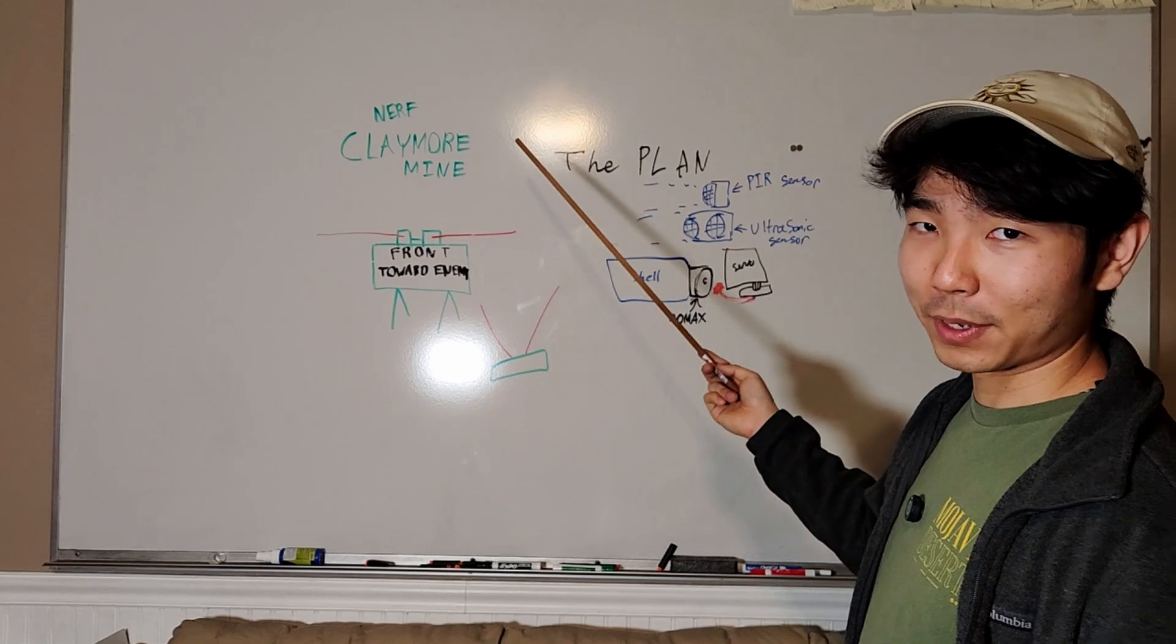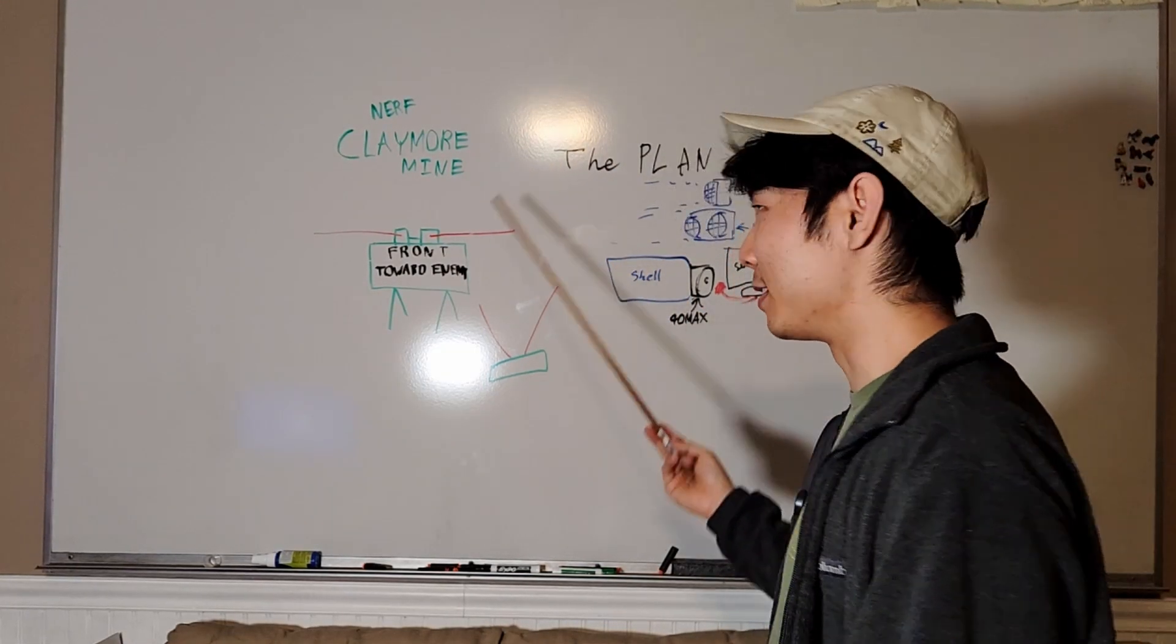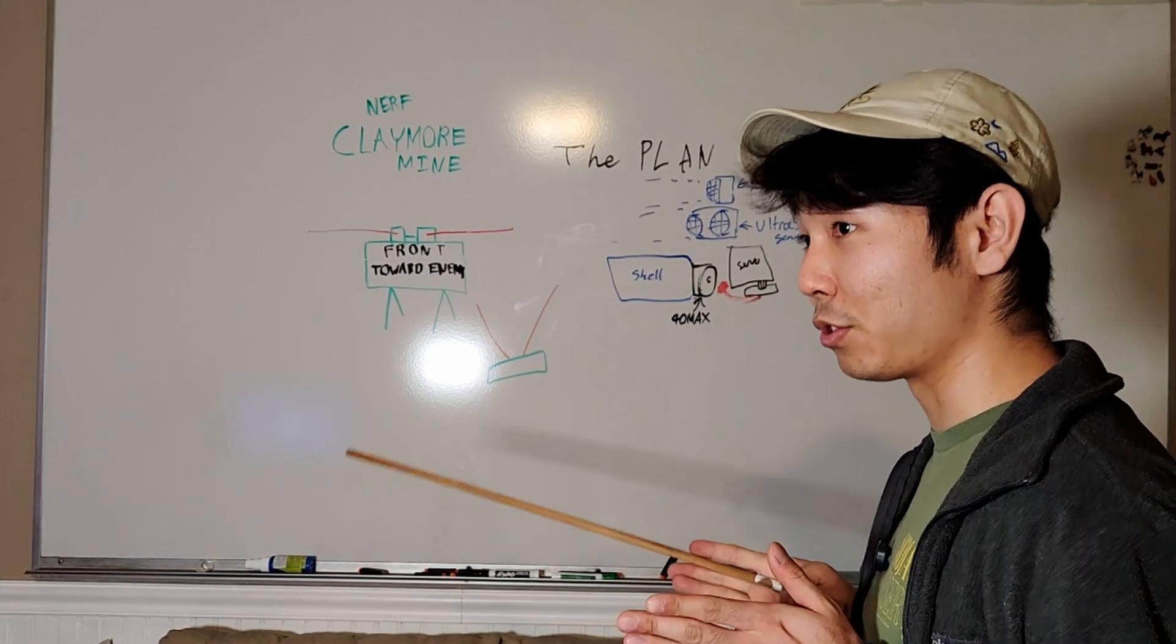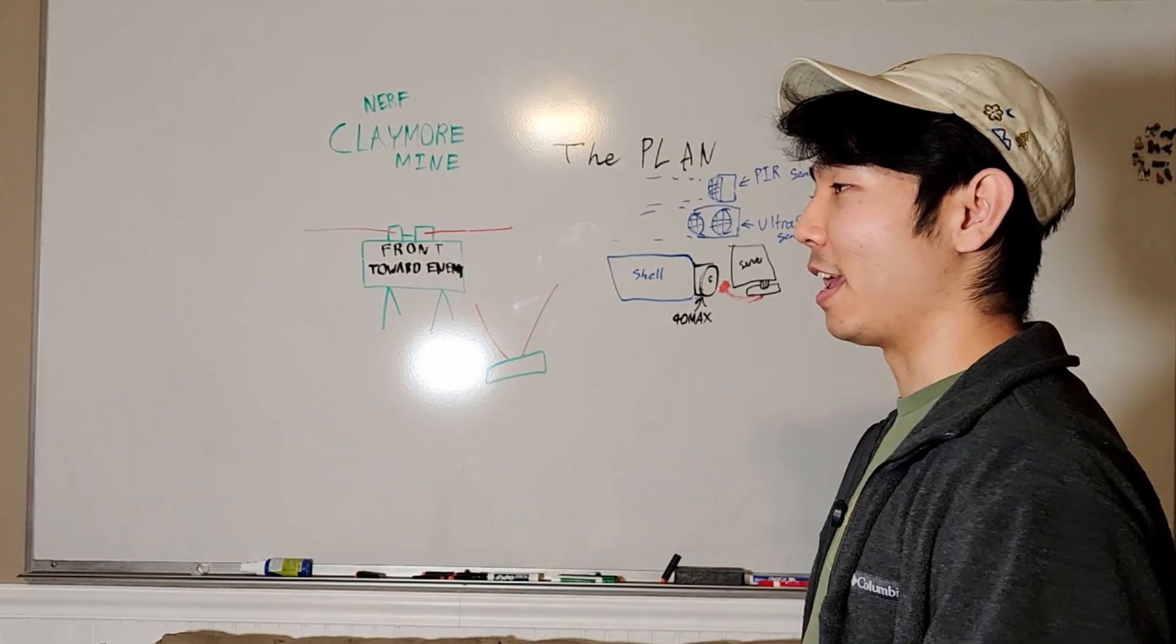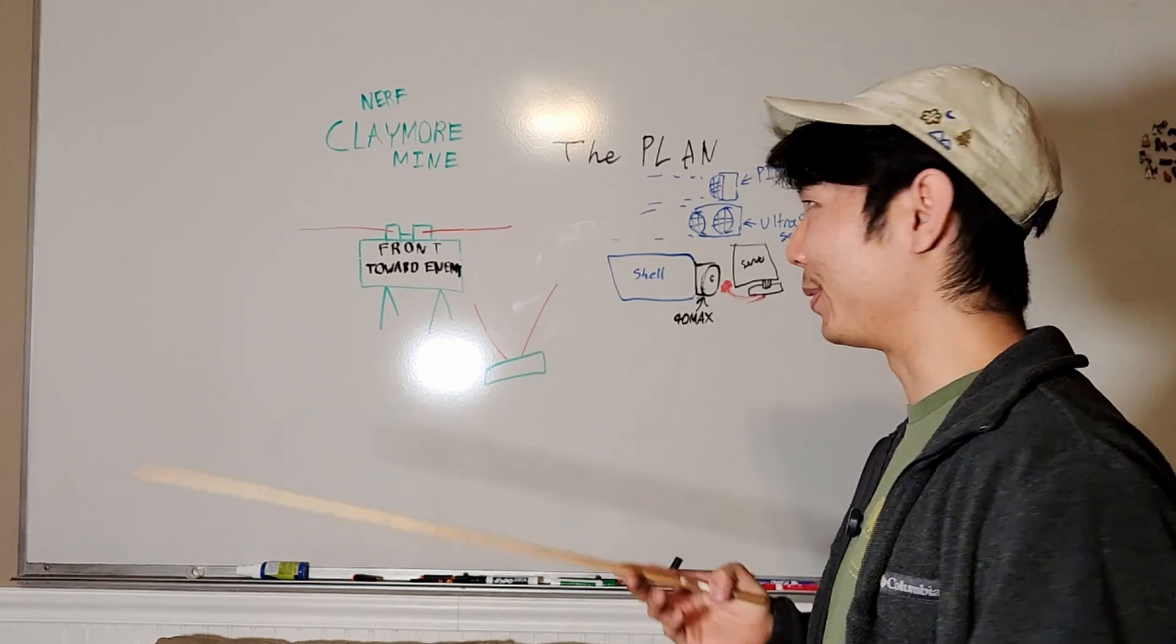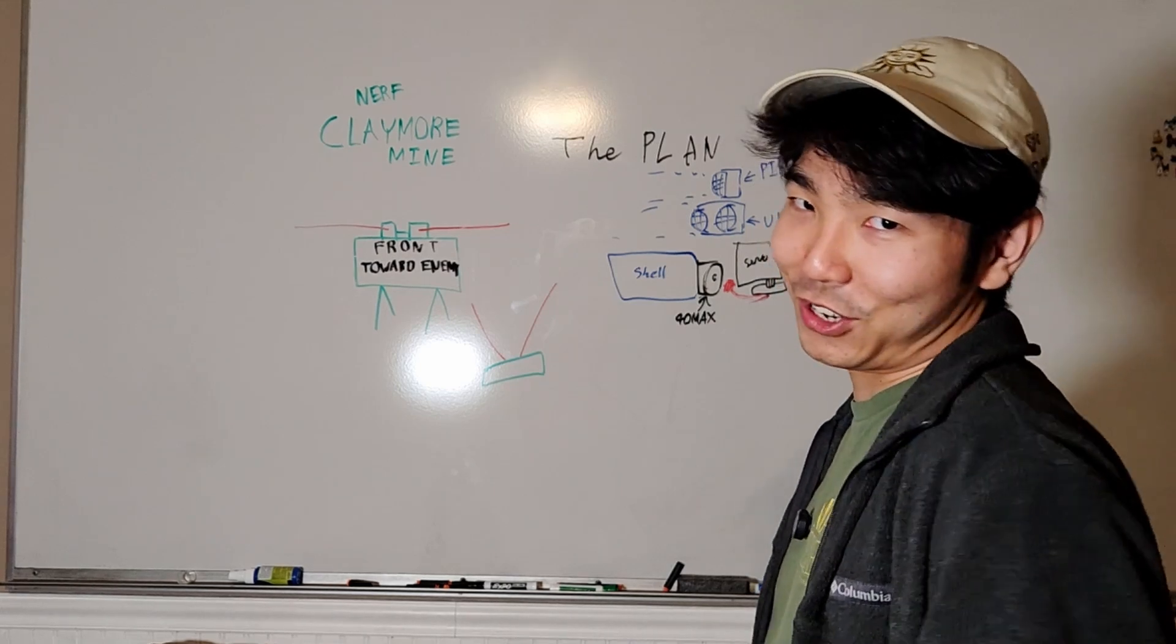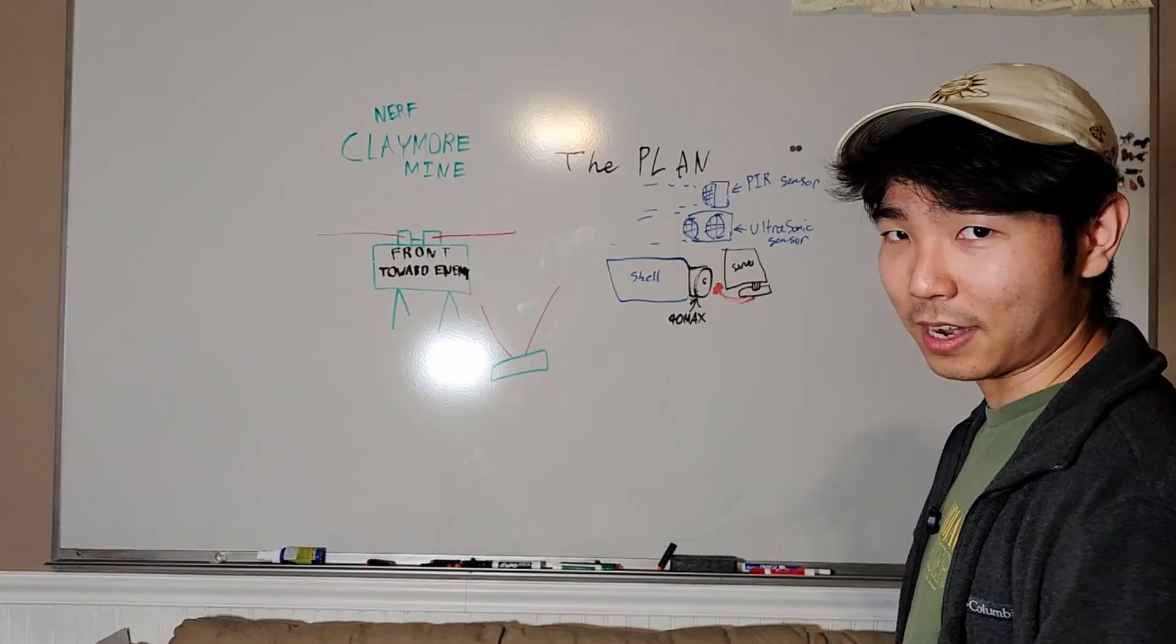Hi, today we're going to be building a nerf claymore mine. If you're not sure what a claymore mine is, it is a directional anti-personnel mine, meaning that it shoots in a single direction instead of radially. It's meant to take out personnel, but ours is gonna be nerf, so non-lethal. It's just for fun, it's not gonna hurt anyone.